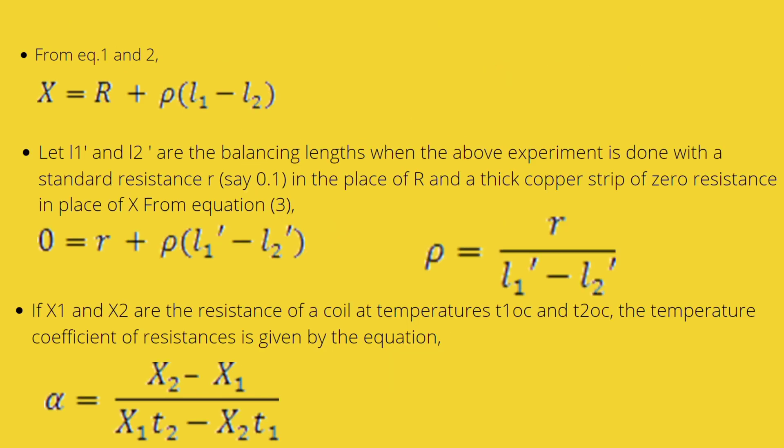By comparing these two equations, we get X equals R plus rho L1 minus L2. Let L1 and L2 are the balancing lengths when this experiment is done with the standard resistance R in place of capital R and a thick copper strip of zero resistance in place of X. In the above equation, we get rho equals R divided by L1 minus L2.